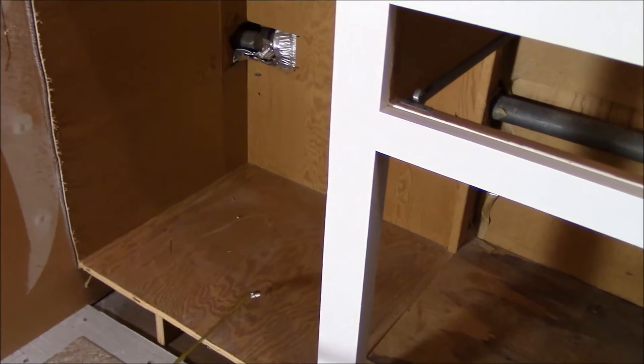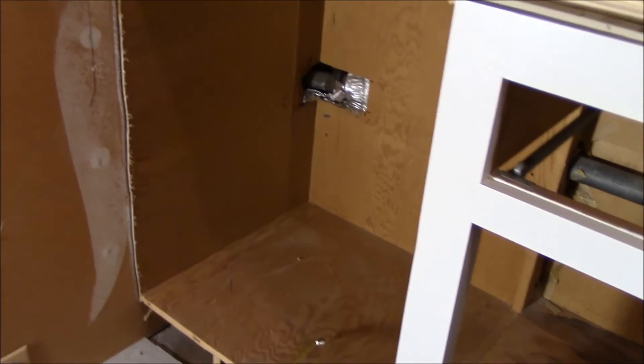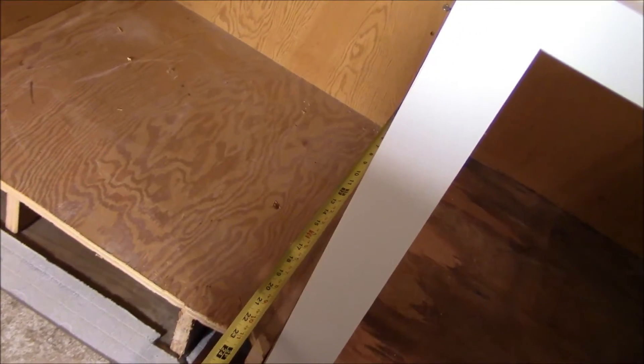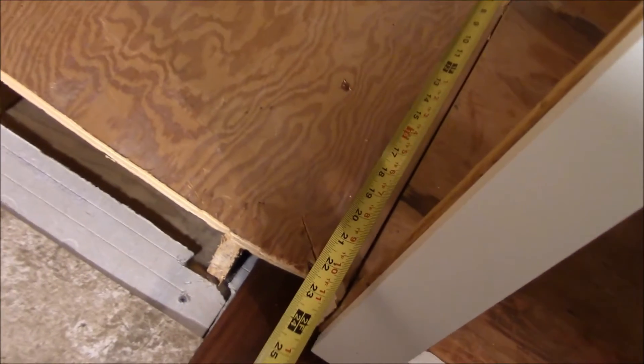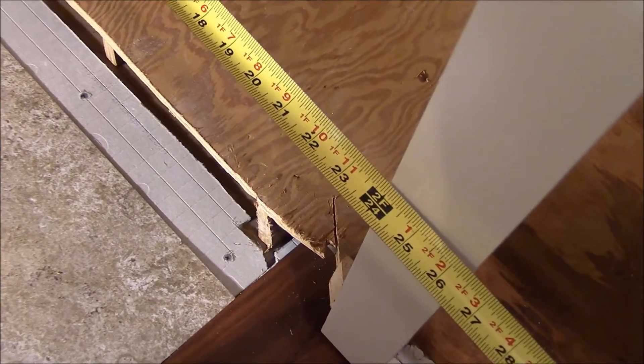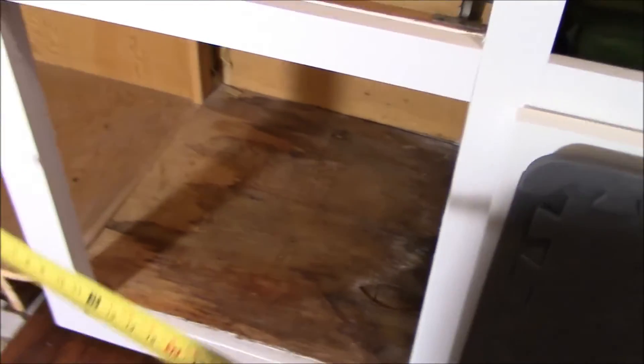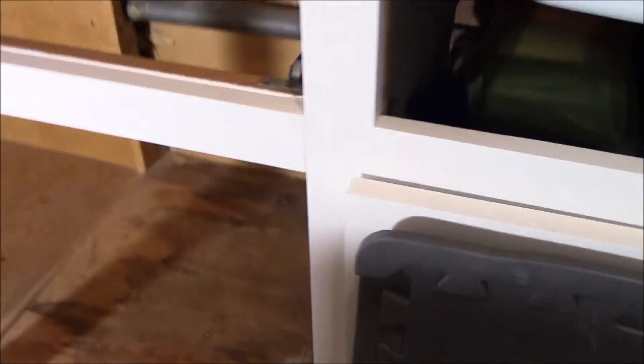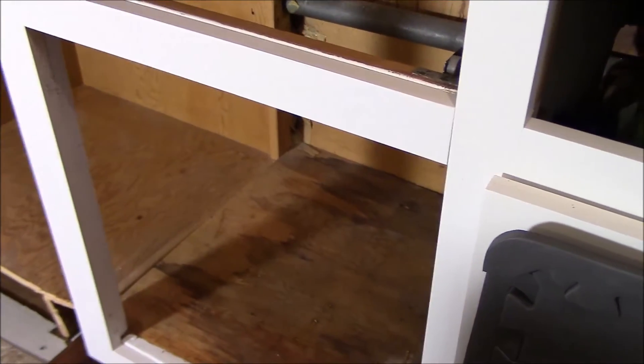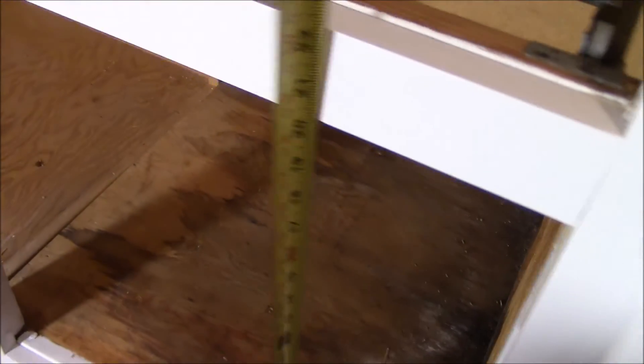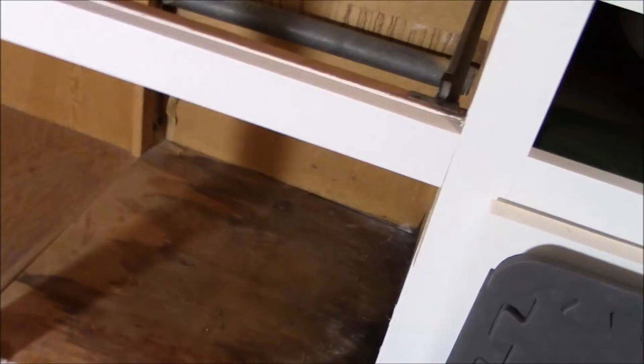So instead of a Lazy Susan, I came up with the idea of calling it a Lazy Bob. What I did first was I made some dimension measurements. I found out that this quite naturally is roughly 20 inches. The length of the dead space is roughly 24 inches. And my primary cabinet door is about 20 inches by 20 inches, so 20 inches square.